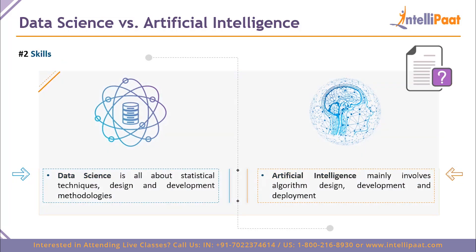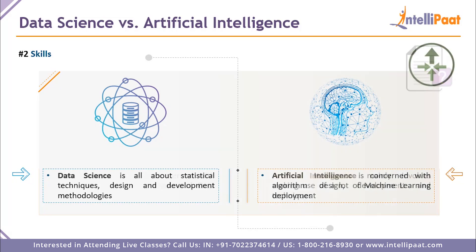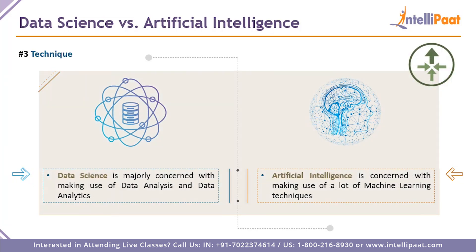Coming to point two: skills. Data science is an umbrella term covering a lot of statistical techniques, design techniques, and development methodologies. Artificial intelligence, on the other hand, involves algorithm design, algorithm development, efficiency conversions, and the deployment of the designed and developed products.